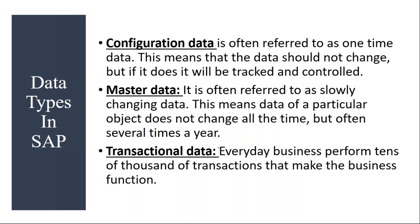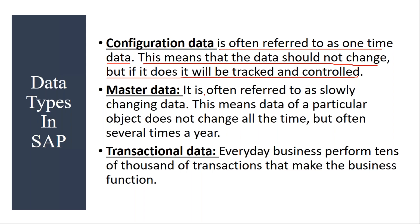Configuration data is often referred to as one-time data. This means that the data should not change, but if it does, it will be tracked and controlled. Configuration data is like a one-time data. Normally the consultants will do this configuration, and whenever this configuration is done, it will be tracked through a transport request.